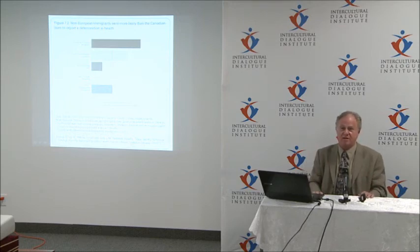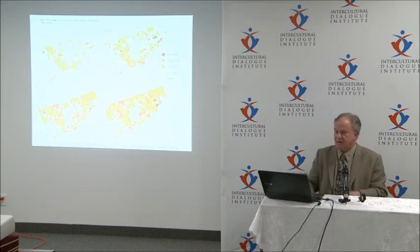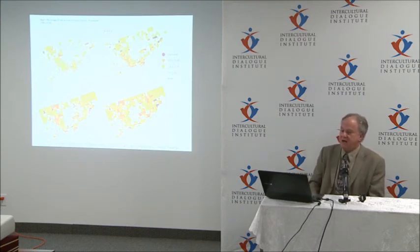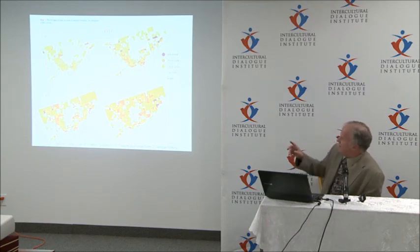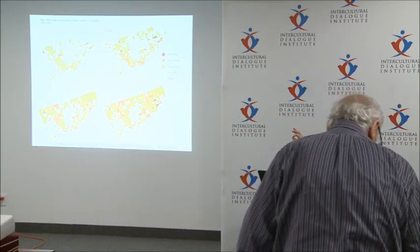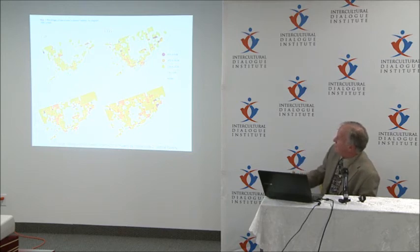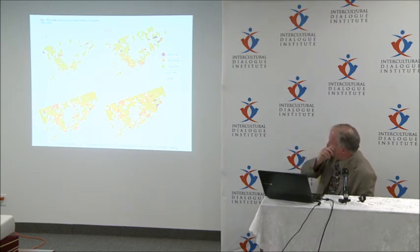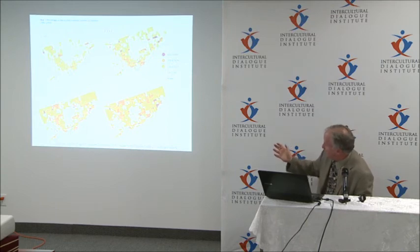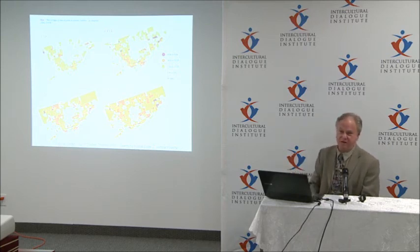The United Way poverty map shows that in 1981, certain neighborhoods had higher poverty rates. But as Canada's economy grew and became wealthier, by 2006, outside of Rosedale, the beaches, and parts of Etobicoke, what you see is a tremendous growth of poverty spreading across the city of Toronto.